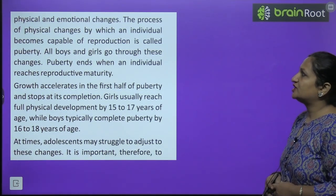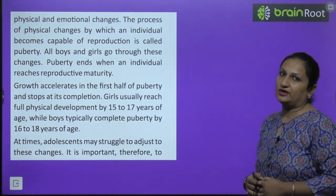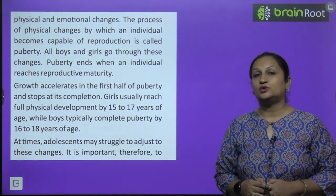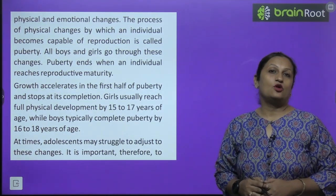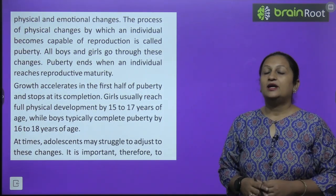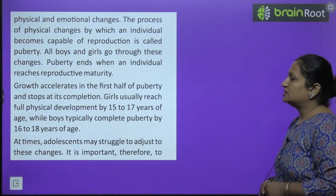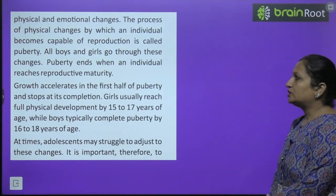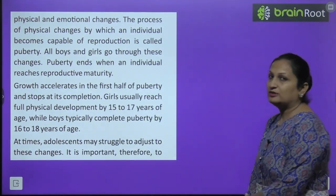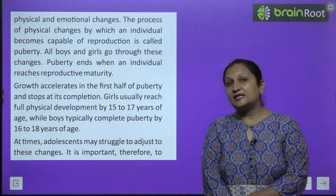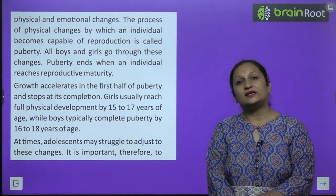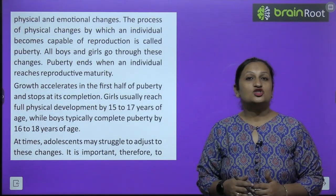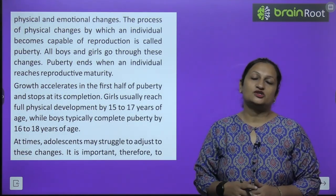The process of physical changes by which an individual becomes capable of reproduction is called puberty. Puberty is the stage when an organism, whether male or female, attains full physical growth and is capable of reproduction. All boys and girls go through these changes. Puberty ends when an individual reaches reproductive maturity. When we see a small child, we cannot tell if it is male or female, but as the child grows, changes differentiate a male child from a female child.